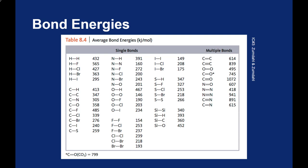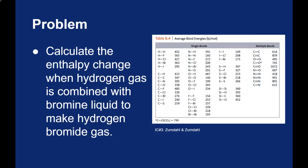This chart in the text shows a variety of bond energies for various covalent bonds. Let's use this chart to predict the enthalpy change for a chemical reaction. Let's see if we can find out how much energy is involved when you combine hydrogen gas and bromine liquid to make hydrogen bromide gas.